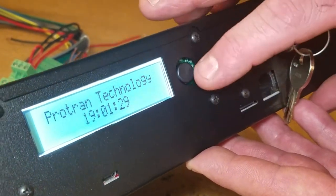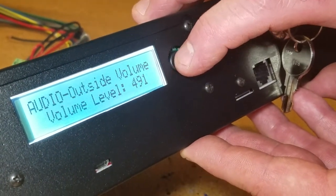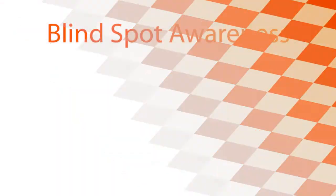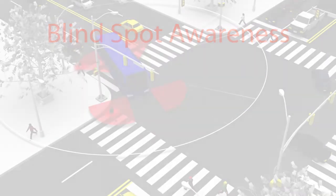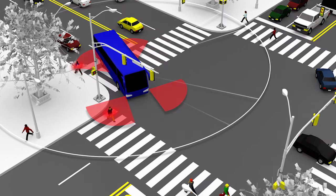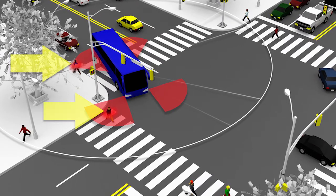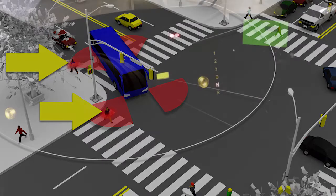Data logging information is stored on the unit's SD card located on the front of the control unit. Protran Technology offers Blind Spot Awareness, an additional secondary warning option to the Safe Turn Alert. Blind Spot Awareness detects pedestrians and cyclists located within the bus's blind spot while making a turn, and uses audible and visual indicators installed on the bus's dashboard to warn the driver.